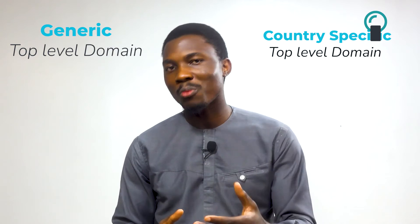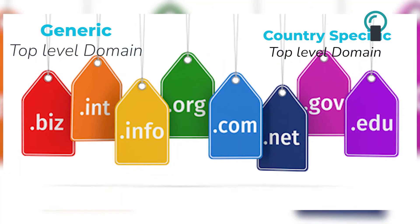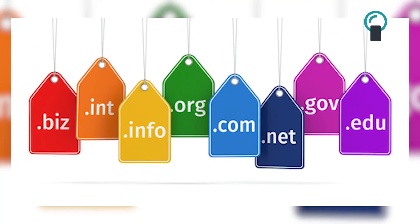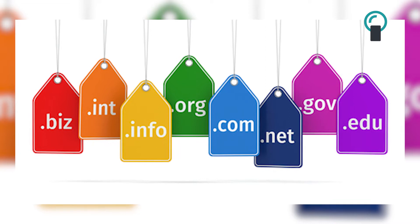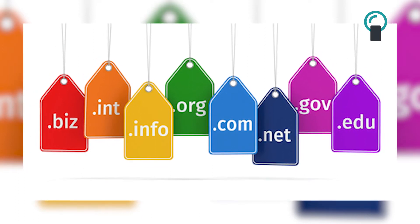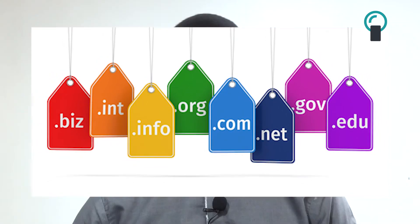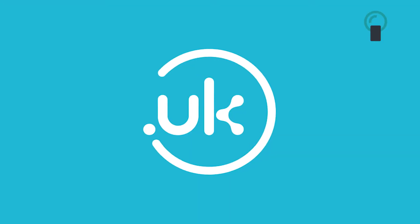Let's take a look at the categories of top-level domain. We have generic top-level domain, and we have country-specific top-level domain. Talking about the generic top-level domain, we have .net, we have .org, we have .com. You've come across these things before, and we're going to understand why they are generic in a very short while.